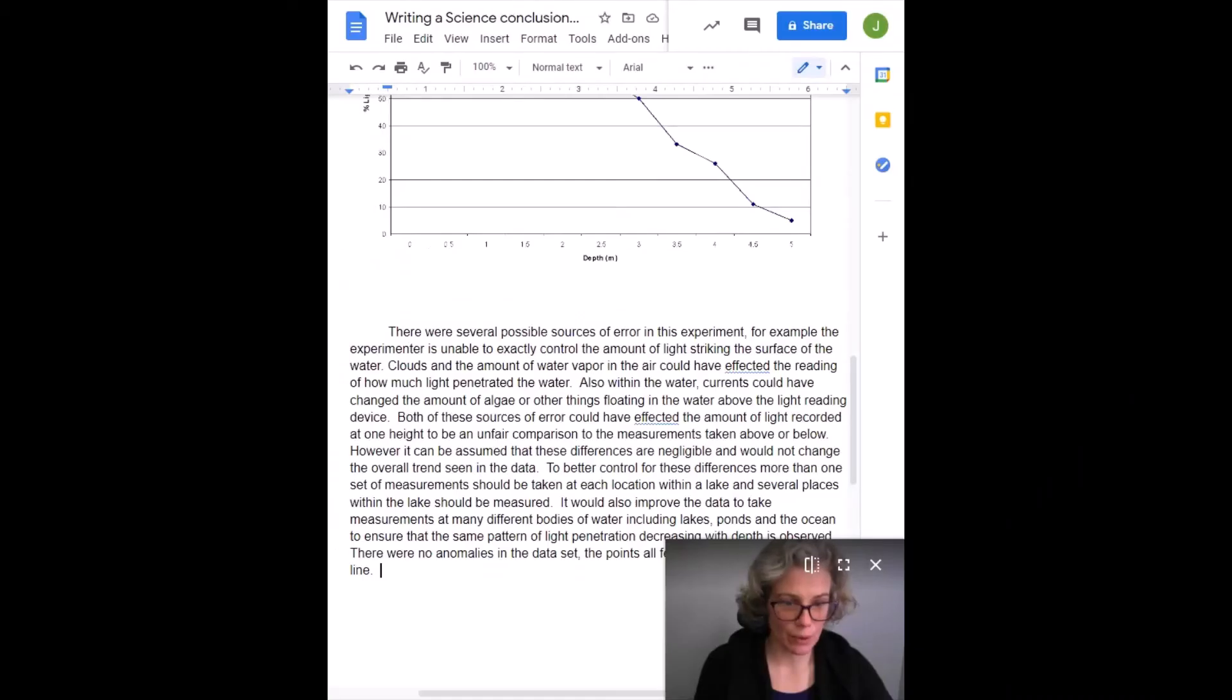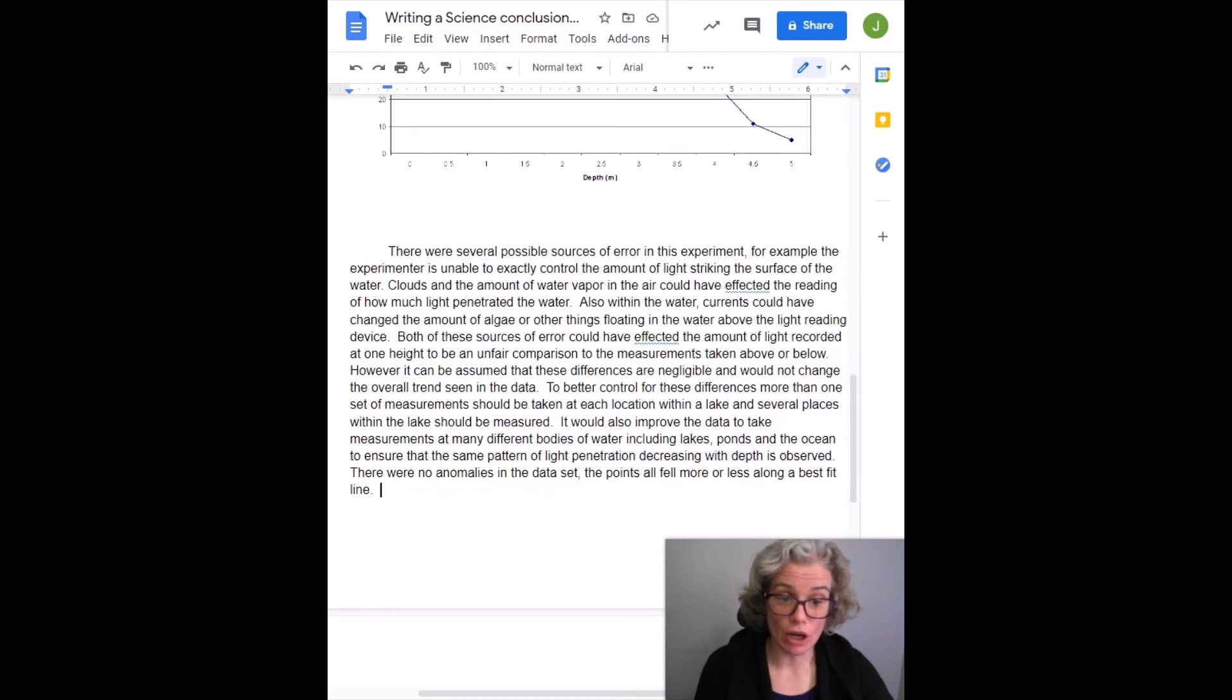We wrote that to better control these differences, more than one set of measurements could be taken at each location within a lake, and several places within the lake should also be measured. It would also improve the data to take measurements at many different bodies of water including lakes, ponds, and oceans to ensure the same pattern of light penetration decreasing with depth is observed.